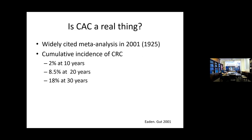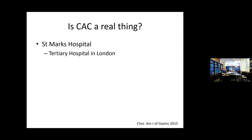But is this thing real? This widely cited meta-analysis in 2001 by Eden looked at about 116 studies dating back to 1925. The cumulative incidence of colorectal cancer at 10, 20, and 30 years increased to 2, 8, and 18%. This dictated a lot of the protocols in the early 2000s. St. Mark's Hospital is a tertiary hospital in London, and I'm going to speak a lot about the data that comes from St. Mark's because there are very good endoscopists in Britain and they have very good surveillance programs.